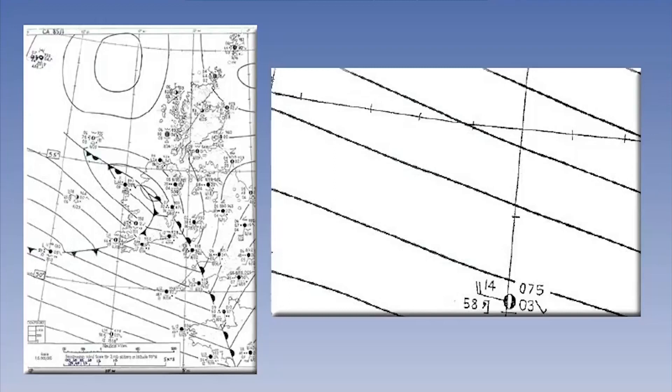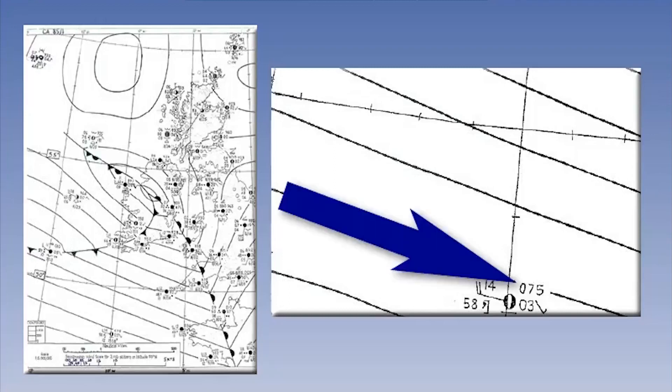If this is a northern hemisphere map, the geostrophic wind will be blowing from the west, at about 285 degrees. The speed can be found from the geostrophic wind scale. In this example, it is 20 knots.